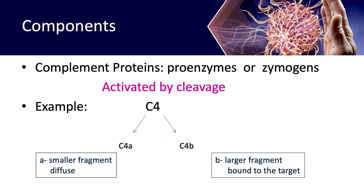Our liver, monocytes, macrophages, gastro-intestines, genital urinary tract, and epithelial cells — these cells synthesize complement proteins. Initially, these proteins exist in an inactive form, as pro-enzymes. Zymogens are existing. This inactive form becomes active through cleavage.